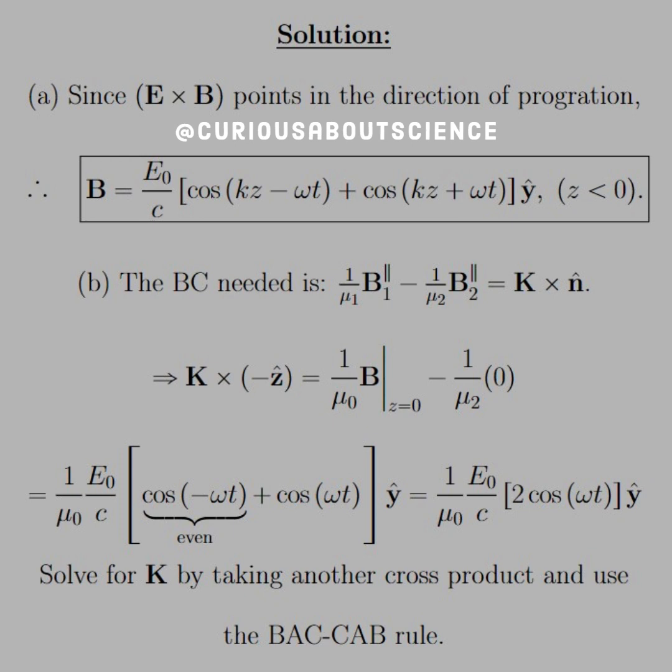So, if we do that, we get that K cross negative z hat is equal to 1 over mu naught, e naught over c, cosine of negative omega t plus cosine of omega t. But since cosine is an even function, that negative sign doesn't matter, and we're able to join it up together to get 1 over mu naught times e naught over c times 2 cosine of omega t in the y-direction. In order to solve for K, we have to do a clever trick by invoking the backcab rule.